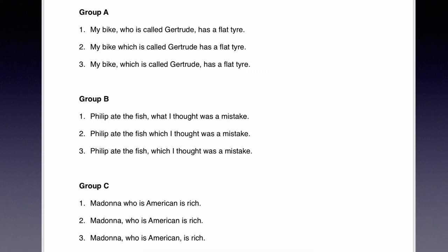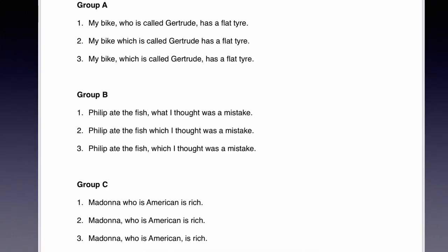C, three: 'Madonna, who is American, is rich.' Obviously we have 'who' because Madonna is a person. The basic sentence is 'Madonna is rich,' so 'who is American' is additional, extra information — this is a non-defining relative clause. We don't need 'who is American' to know who Madonna is. If there were two Madonnas, we might have it without commas: 'the Madonna who is American is rich, whereas the Madonna who is Canadian is poor.'